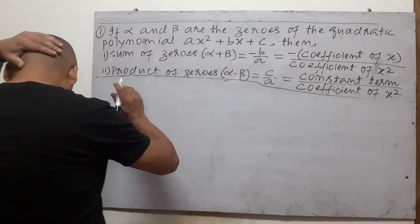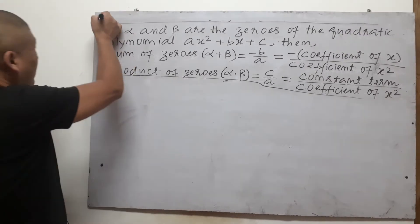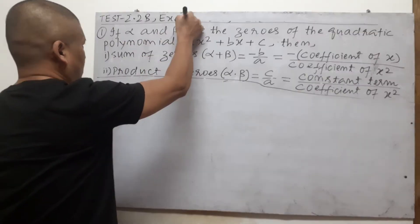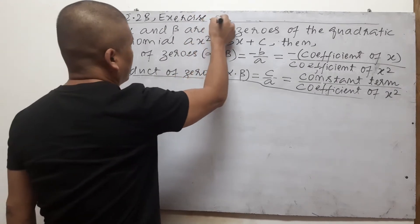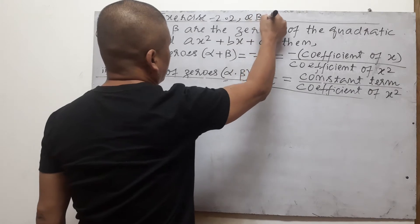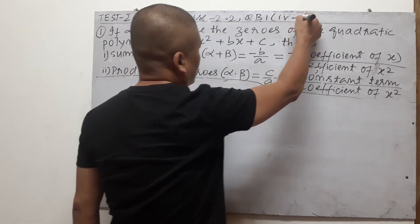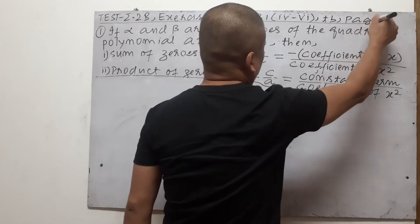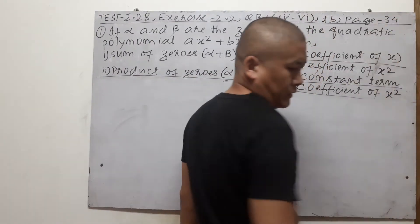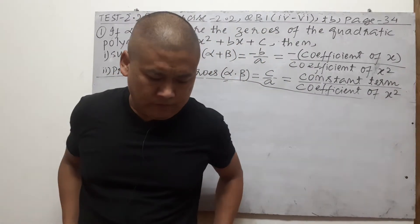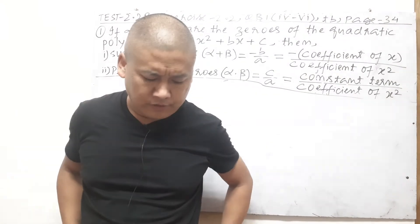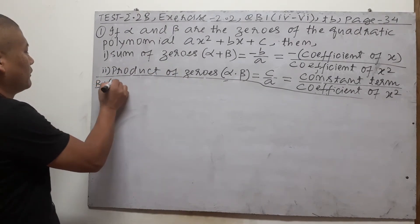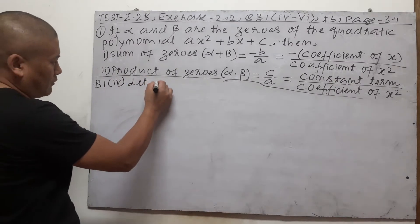Okay, next test. Let's do test 2.2b. We're working on equation b1 subheadings 4 to 6, found on textbook page 34. Open your textbook to page 34. The task is to find the zeros of the following quadratic polynomials and verify the relationship between the zeros and the coefficients. Let's start with b1 subheading 4, doing it the same way as previously.